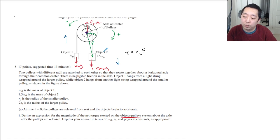So, the torque from object 2 would equal, this is causing a clockwise rotation, a positive torque. So, that would be R0 times 1.5m0g.